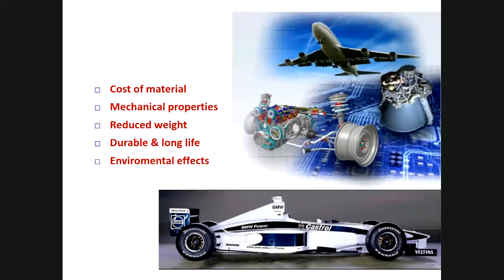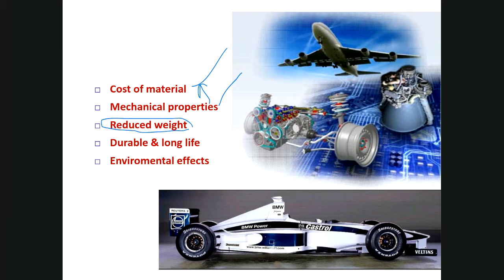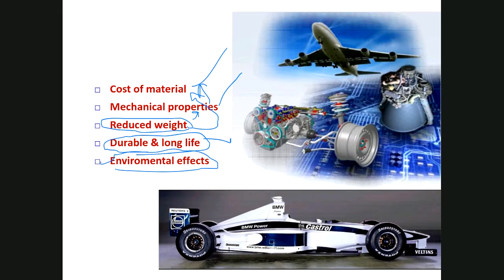Material selection criteria include: cost (expensive vs. affordable material), mechanical properties (strength, stiffness, etc.), weight reduction (lightweight vs. heavy — for aeroplanes, lightweight is preferred even if more expensive), durability (long service life to avoid frequent replacement), and environmental effects (resistance to rain, sun, and other environmental conditions).